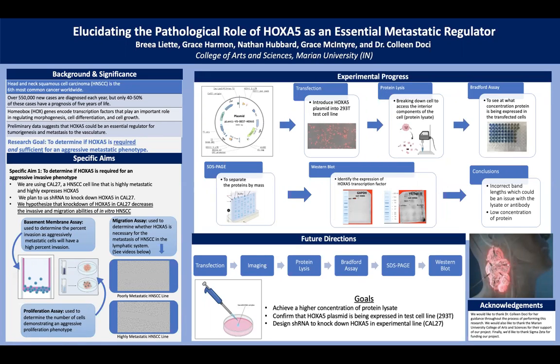To achieve this, we are specifically going to use Cal27, which is a cell line that is not only highly metastatic but also highly expresses the HoxA5 gene. To knock down HoxA5 in Cal27 specifically, we are going to use shRNA. Our hypothesis is that knocking down HoxA5 will decrease the invasion and migration abilities in in vitro head and neck squamous cell carcinoma.